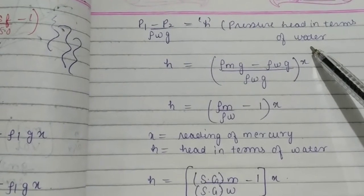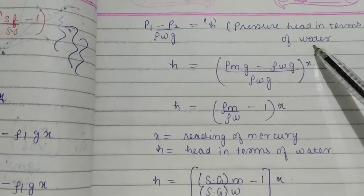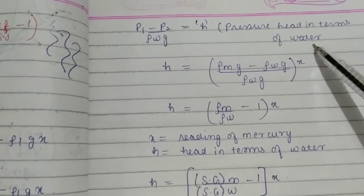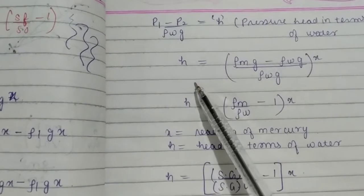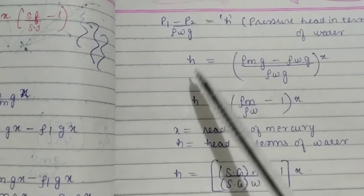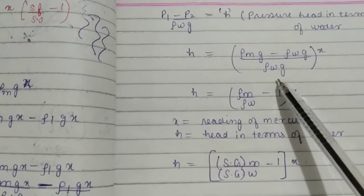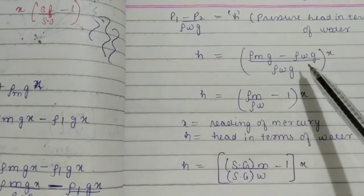Here you can see this P1 minus P2 by rho Wg gives you the pressure head in terms of water. And that is what is our H that we have to substitute in the question. Last class as I told you that I will tell you how to solve it.